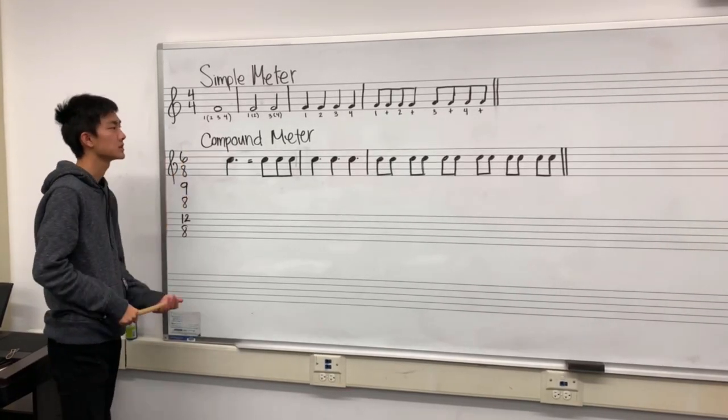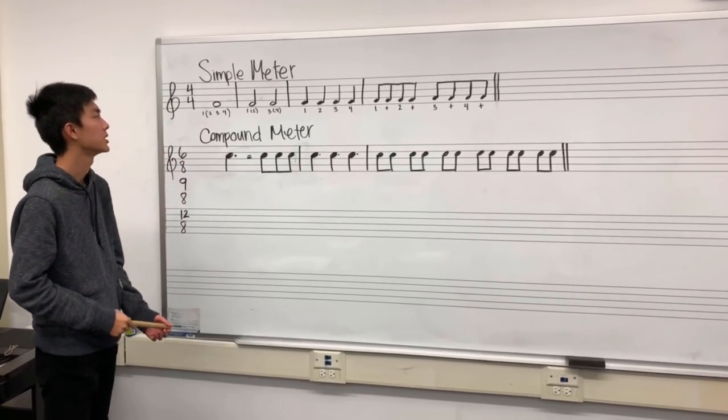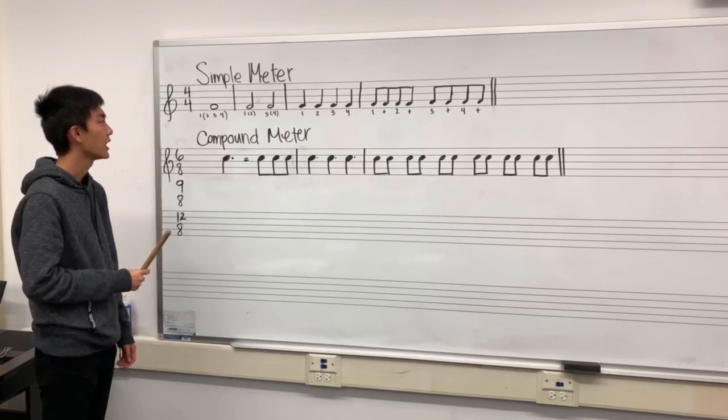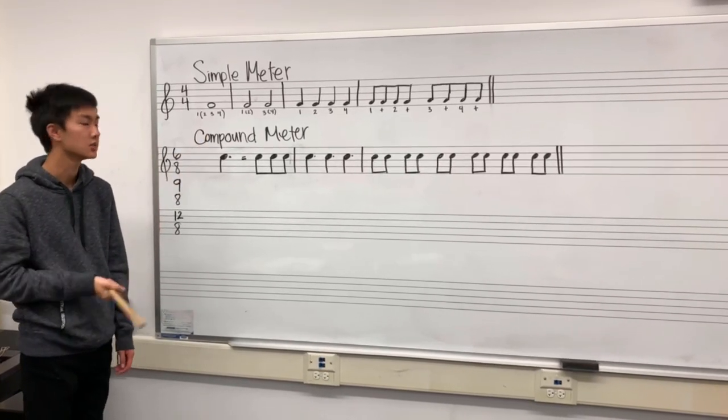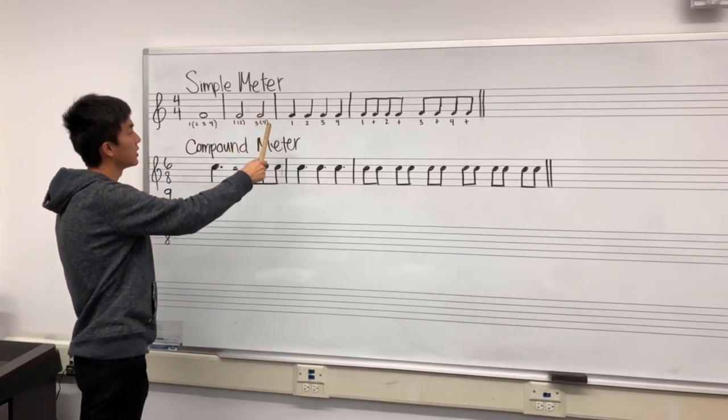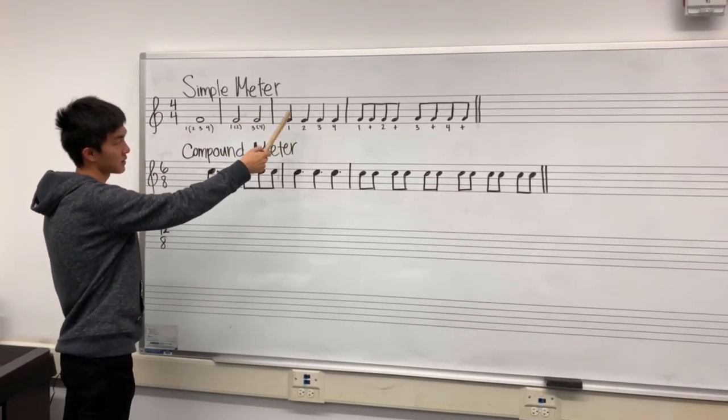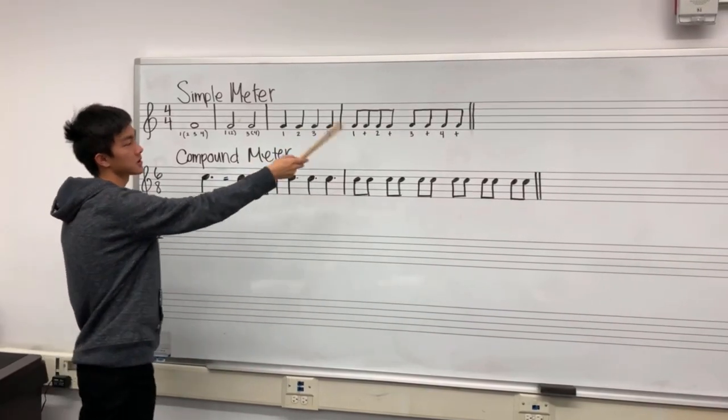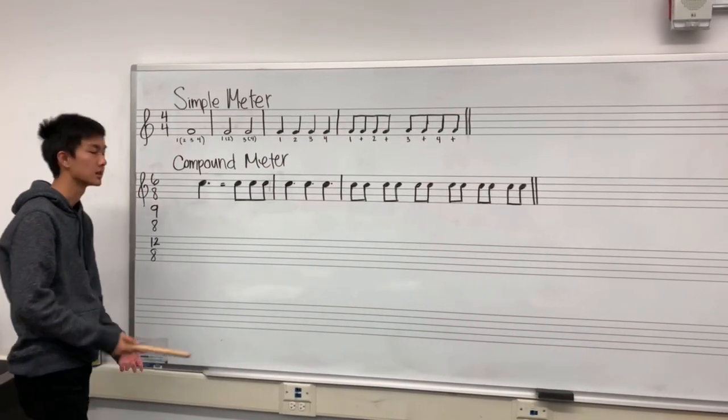So a whole note, we all know, retains the value of four beats per measure. Each beat after that is divided into two notes, so this is divided into two as half notes. Two half notes get divided into two as four quarter notes, and so on with the eighth notes and sixteenth notes.